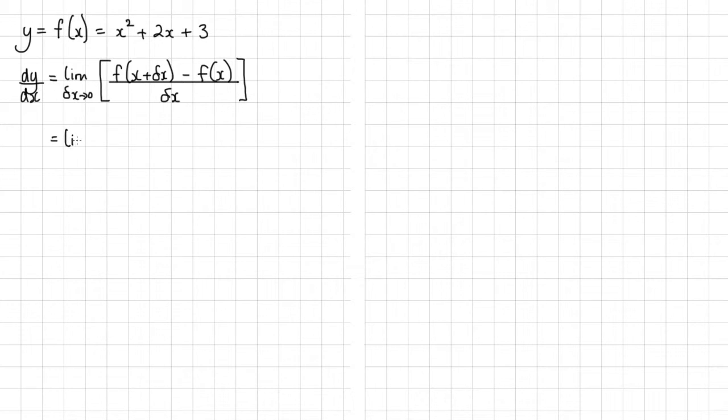So what we're going to get here is the limit as delta x tends to zero. Okay, so what is f of x plus delta x? Well, that actually means we take this function here and wherever we see the x term, we replace it with x plus delta x.